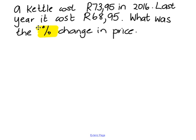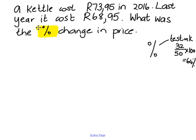As soon as I have an answer that is a percentage, I ask myself two questions. Is it like writing a test mark as a percentage? If you get 32 out of 50, how do you change that to a percentage? You times by a hundred, and that will give you a percentage — which will be 64%. Is this one price out of another? No.